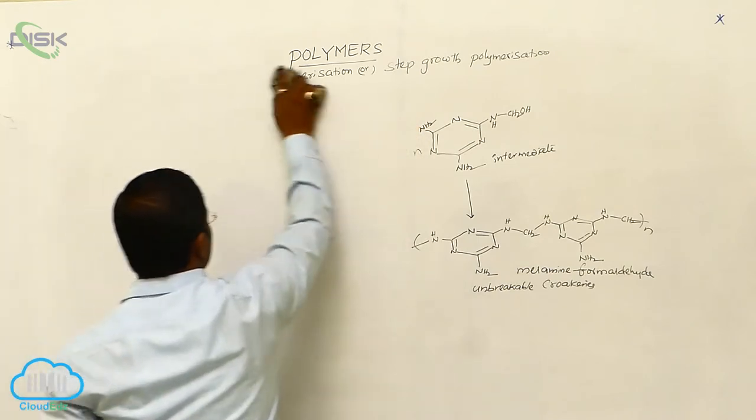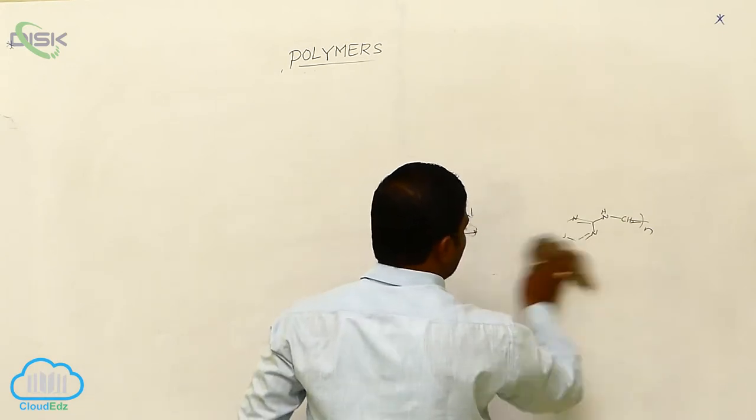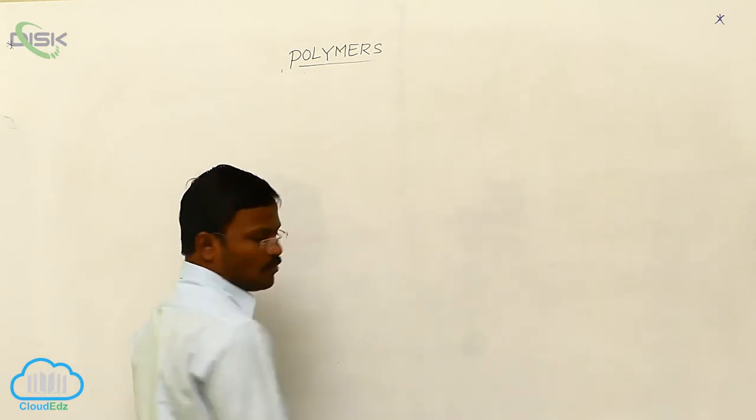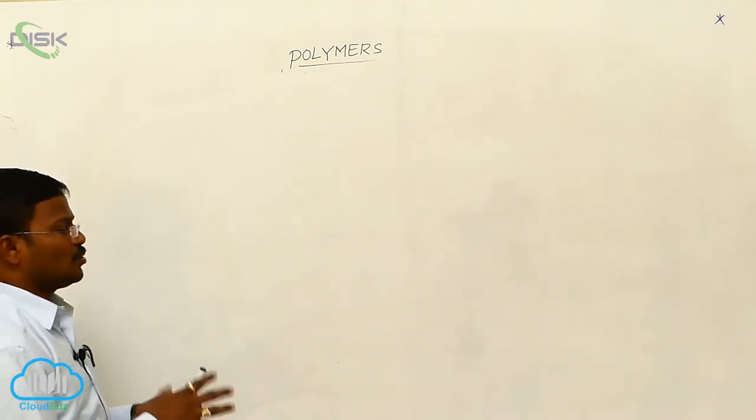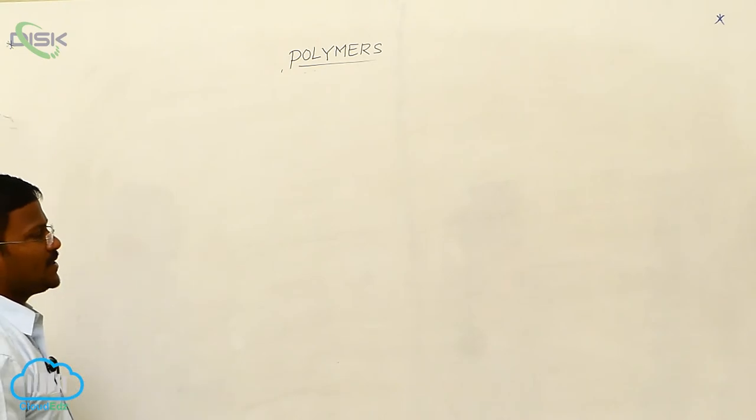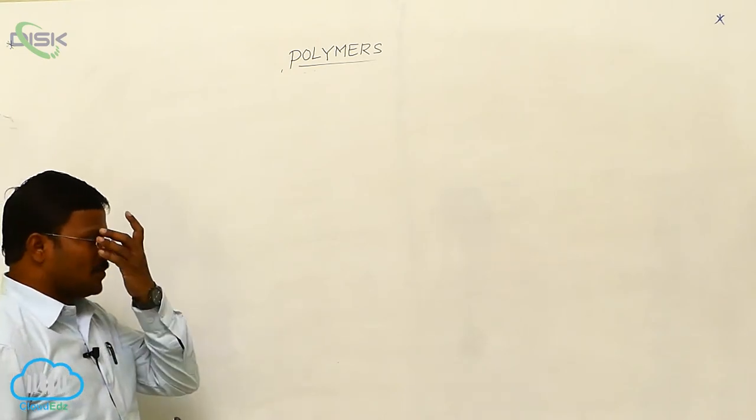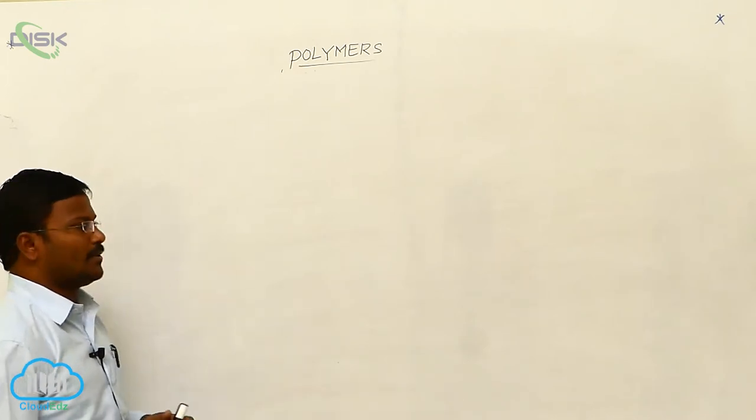What is condensation polymerization? The polymers resulting with the loss of neutral species when two or more monomers have two or more functional groups react with each other. Such type of polymerization is called condensation polymerization or step growth polymerization.